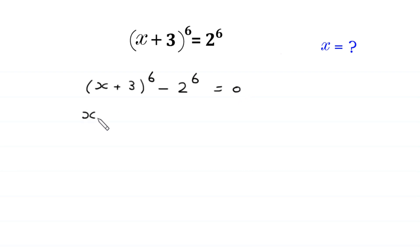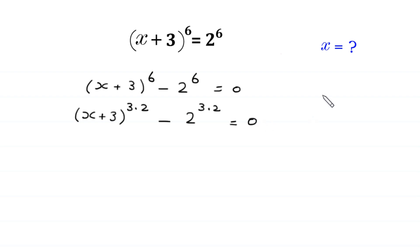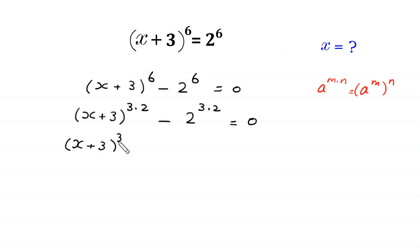Next, the exponent 6 can be written as 3 times 2. So (x + 3) to the power 3 times 2, minus 2 to the power 3 times 2, equals 0. By using the power rule — a to the power m times n equals a to the power m, whole to the power n — this becomes (x + 3) cubed, whole squared, minus 2 cubed, whole squared, equals 0.